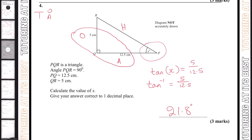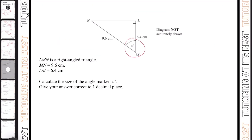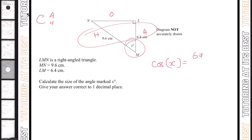So the only difference between calculating an angle and calculating a side is using the inverse button — that's shift followed by sine, cos, or tan. Question five is very similar to question four. We label our sides: hypotenuse, opposite, and adjacent. We have two values, so that's CAH. We write cos x equals 6.4 over 9.6. Putting that into your calculator as cos minus one gives us x equals 48.2 degrees.